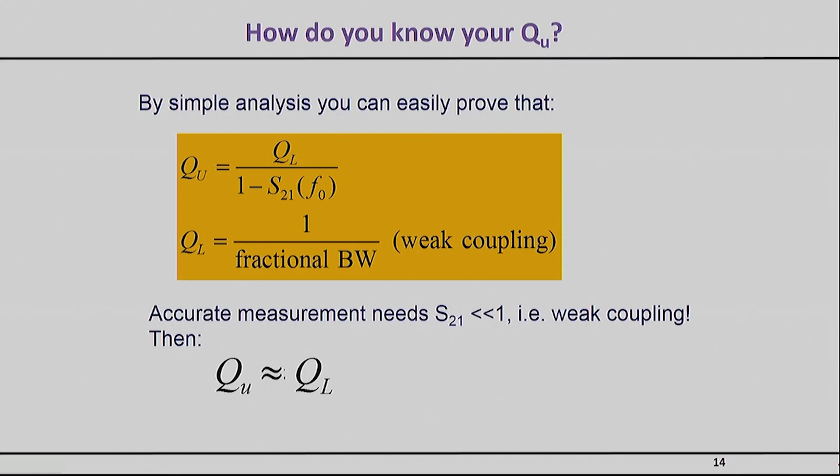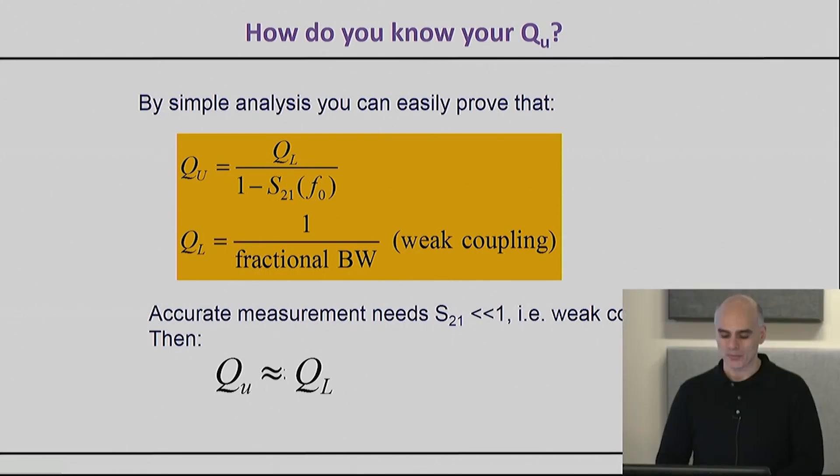Now if you do a very simple analysis in this circuit, you will find out this very well-known equation: Q_unloaded equals the loaded Q (and remember this is what you're actually measuring) over 1 minus S21 at f0, the center frequency of your filter. In other words, because you can measure QL—that's nothing else but one over the fractional bandwidth that we discussed before—you can directly know the Q_unloaded if you can only measure this S21.